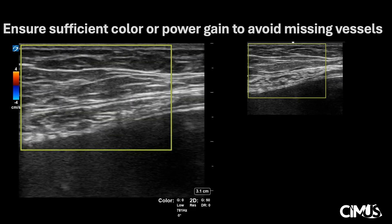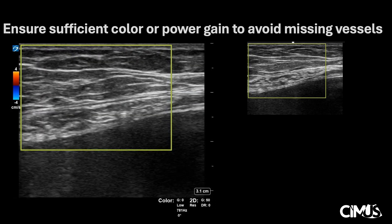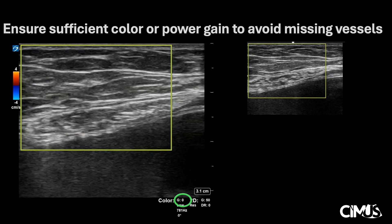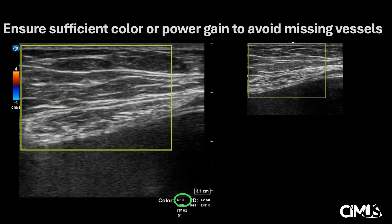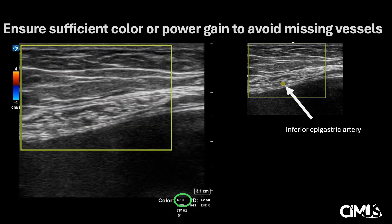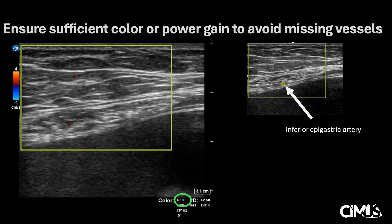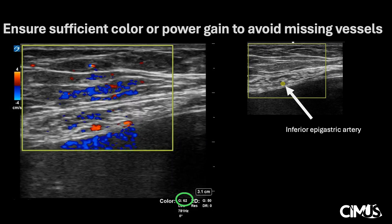Having insufficient color or power gain may miss vessels. On the left, you may think that there are no vessels in this area. However, this is due to our gain settings being low and the machine is thus not picking up adequate signal. Here on the right, we point out where there is in fact an artery that was missed. It is important to note that the vessels were missed even despite having a low velocity setting, which normally picks up very low-flow vessels. By increasing gain, the vessel is now visualized. It is therefore important to ensure not only adequate velocity or scale, but also sufficient gain to avoid missing vessels.